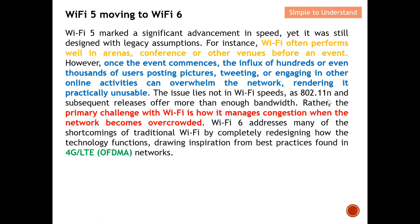The issue actually lies not in the Wi-Fi speed — 802.11n and subsequent changes actually offered more than enough bandwidth. Rather, the primary challenge with Wi-Fi is how it manages congestion. When the network becomes overcrowded, Wi-Fi 5 basically saturates and is not able to respond. But for Wi-Fi 6, they basically address many of the shortcomings of traditional Wi-Fi by completely redesigning how the technology functions. They drew inspiration from best practices found in LTE or 4G, making use of OFDMA to resolve the issue of network congestion.